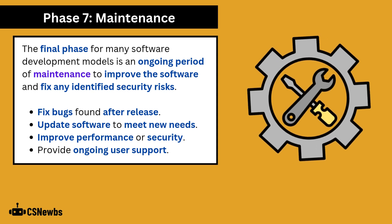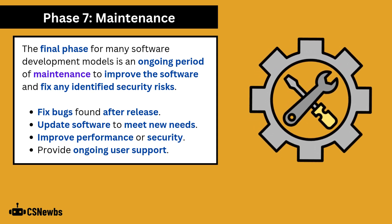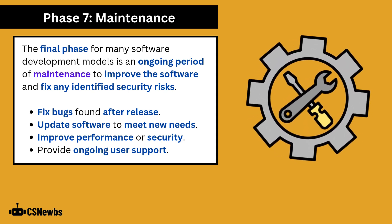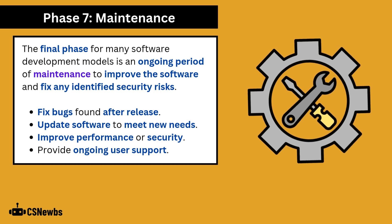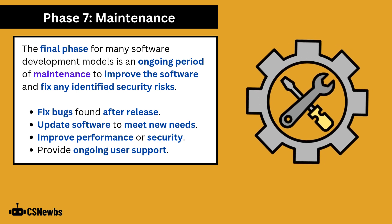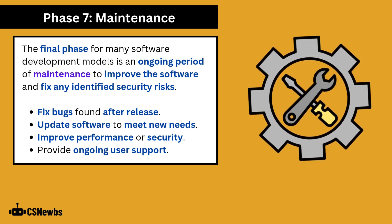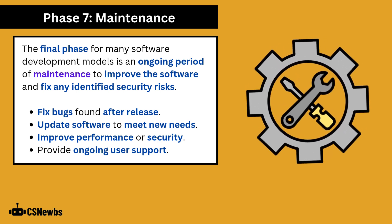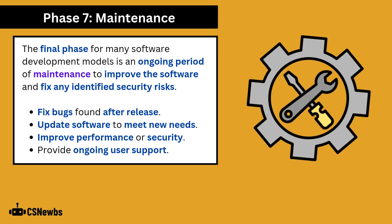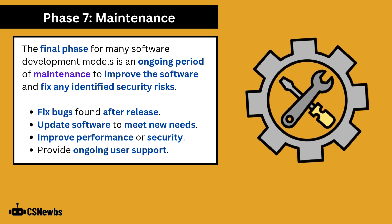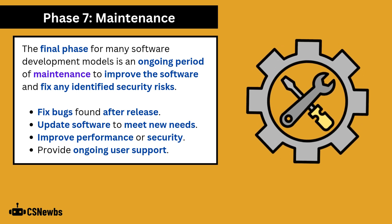The final phase for many software development models is an ongoing period of maintenance to improve the software and fix any identified security risks. In this phase, developers will fix bugs found after release, update software to meet new needs, improve performance or security, and provide ongoing user support.